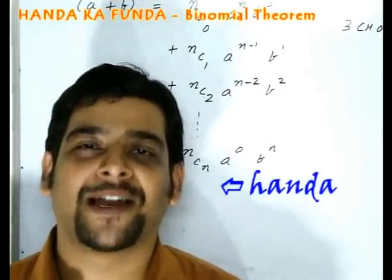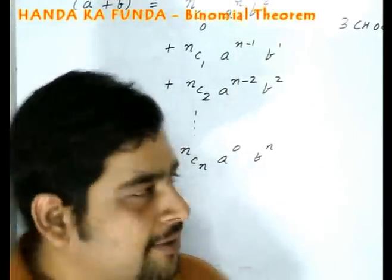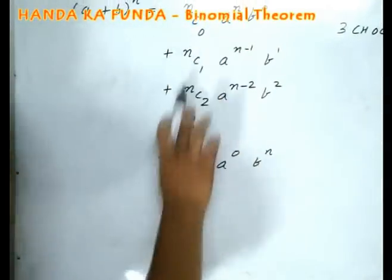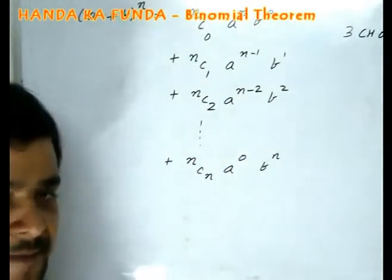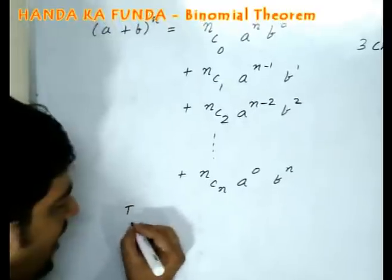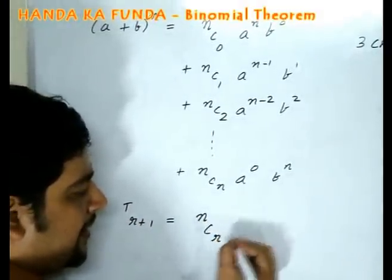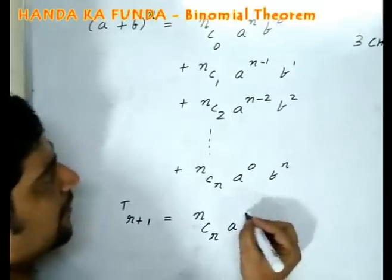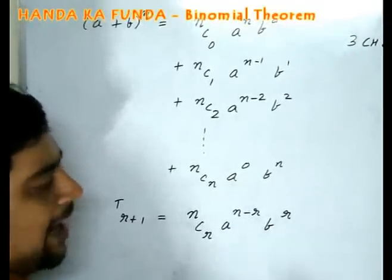Hello and welcome to the session on binomial theorem. This is brought to you by Handa Kafanda. As you can see, I have written down the binomial theorem: a plus b to the power n and this is the expansion. The r plus 1-th term of a binomial theorem is given by nCr a to the power of n minus r, b to the power of r.